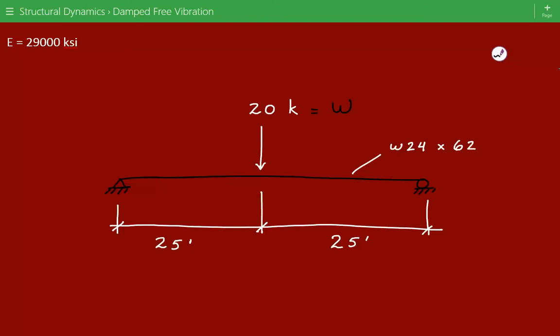And the total length is equal to 50 feet, so 25 feet is L over 2 and L over 2.